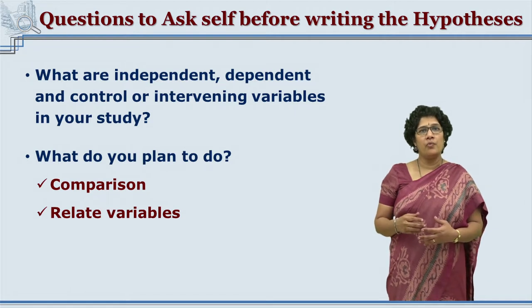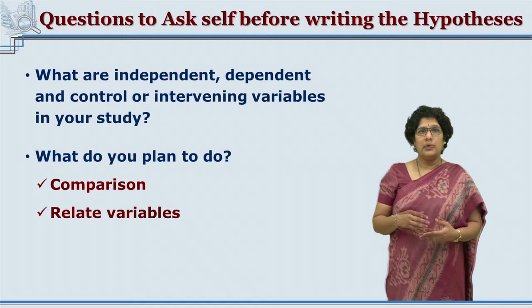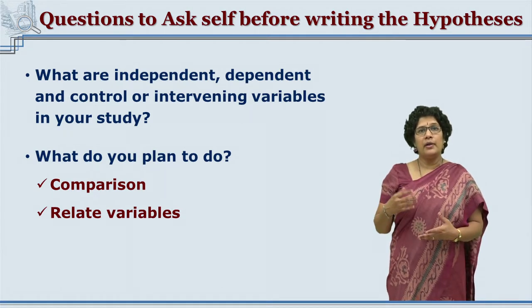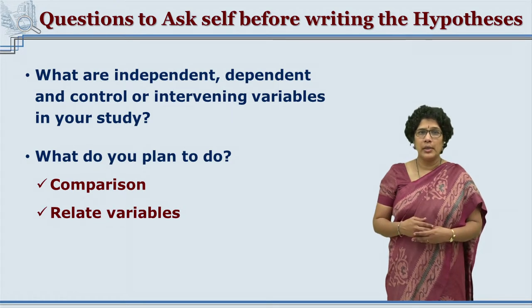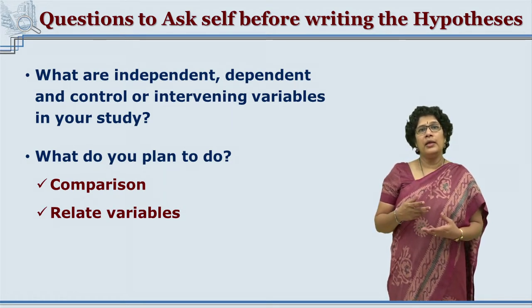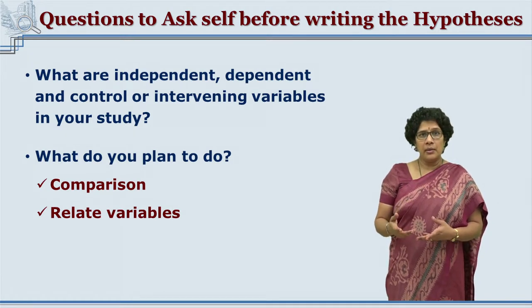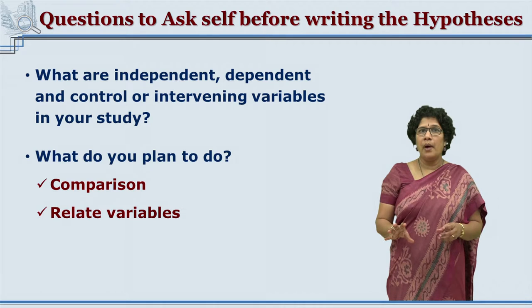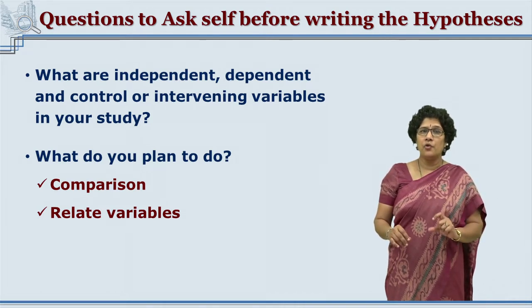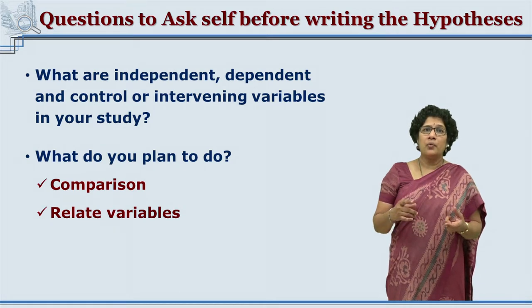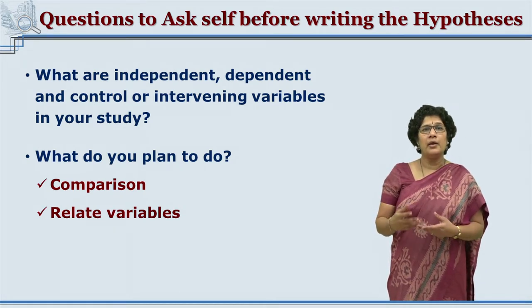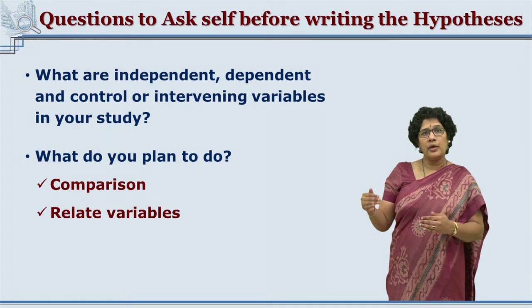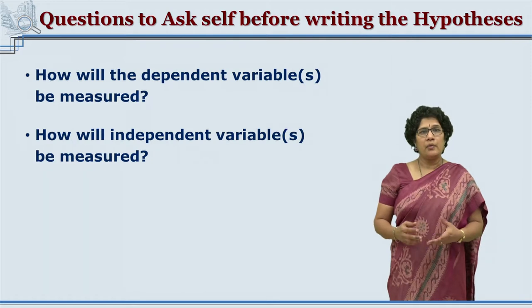Before writing the hypothesis, the researcher should ask some questions. First: which are the variables under study? This includes dependent, independent, control, and intervening variables, which need to be listed in as much detail as possible. The next question is: what is exactly being studied — is it a comparison or a relationship between the variables? The hypothesis will always talk about either comparison or relationship.